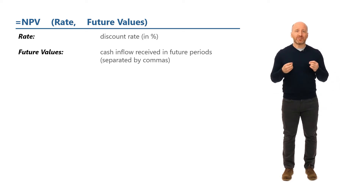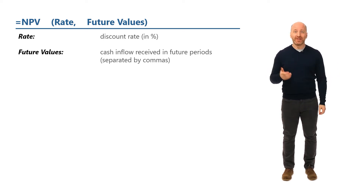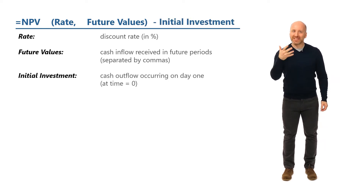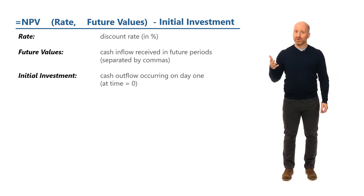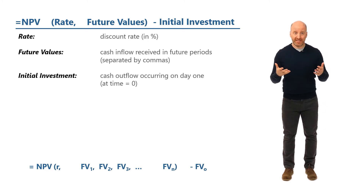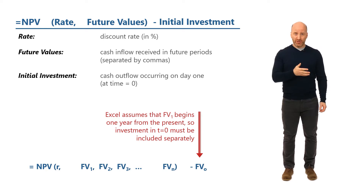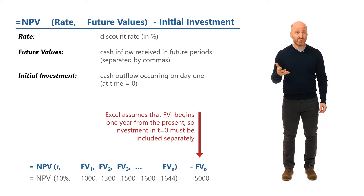You don't need to discount a cash flow that occurs in year zero — by definition, this is already a present value because time zero is today. But Excel expects the first cash flow to be one year into the future. So if you want the NPV calculation to be net of the initial investment at time zero, you need to handle that outside of the NPV function.